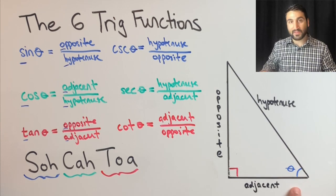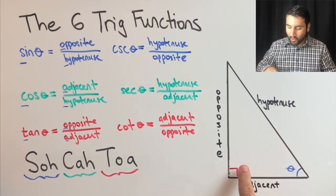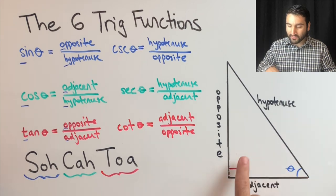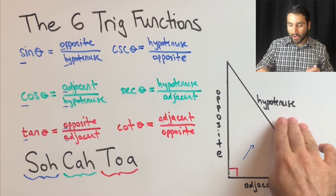Hypotenuse is always going to be the longest leg, regardless of where this theta is. It's the longest leg, and it's also the one across from the 90-degree angle. That's hypotenuse, the H.